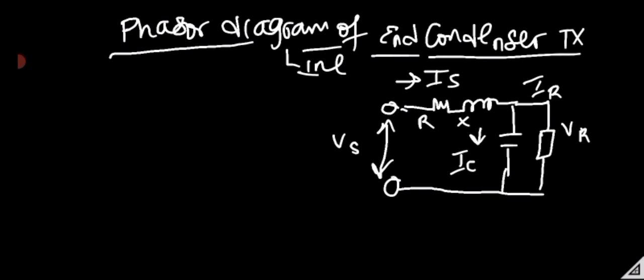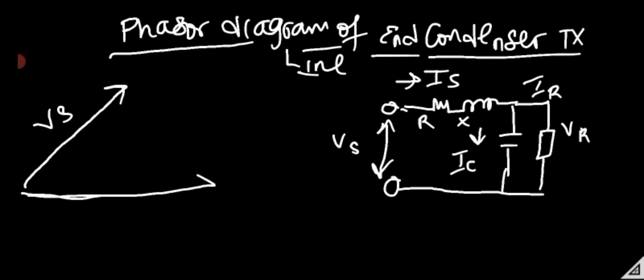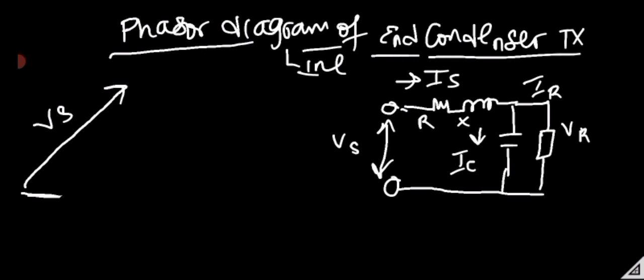From our transmission line fundamentals, we have VS and VX on the line and IR horizontally. However, in this case, IX cannot be drawn horizontally straight because IX has been split into two parts according to this diagram — we have IR and IC. So IX cannot be in a horizontal form; instead we represent it as a vector sum of its components.